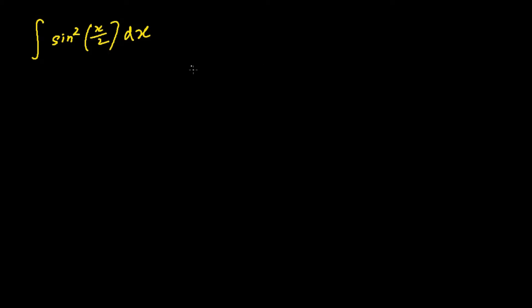So we're going to apply the trigonometry identity that sine square x over 2 is equals to 1 minus cosine x over 2. And then using this knowledge we can move on to the next step.